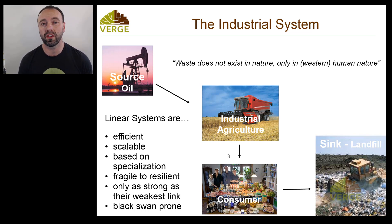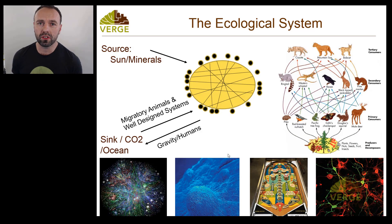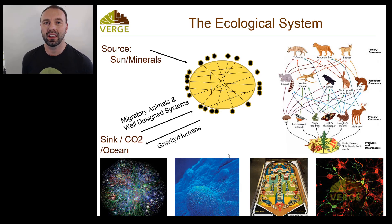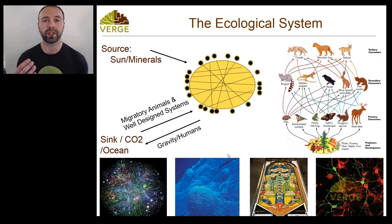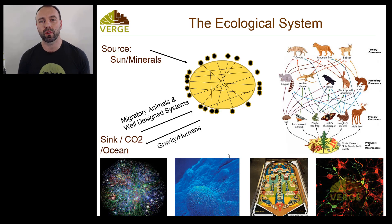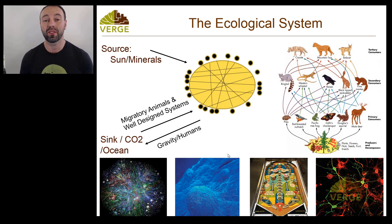Let's compare the industrial system — linear and black swan prone — to the ecological system, which is set up in a completely different way. The ecological system is set up as a web or network. Webs are basically circular: the waste products of one resource become the feedstock for another. The more diversity and connections within the web, the less energy gets sent to sink. Just as the industrial system needs an energy source, the ecological system's source is the sun — which is renewable.